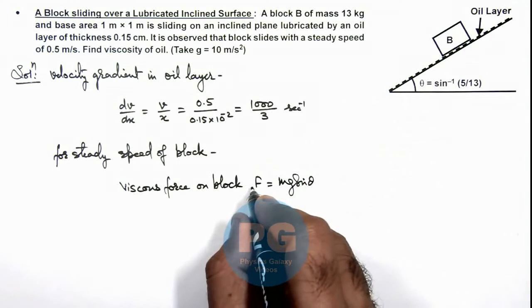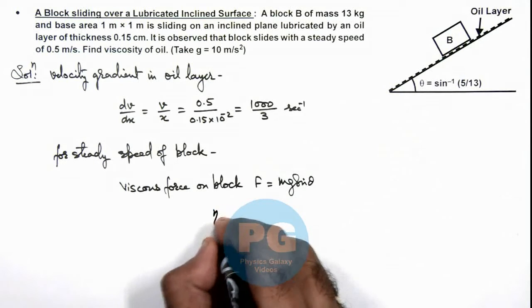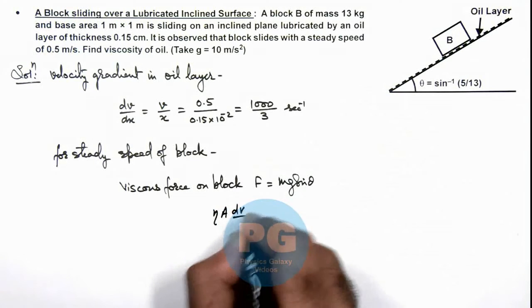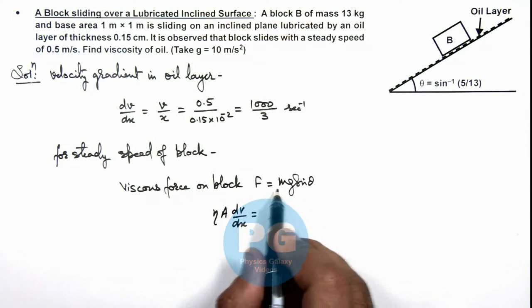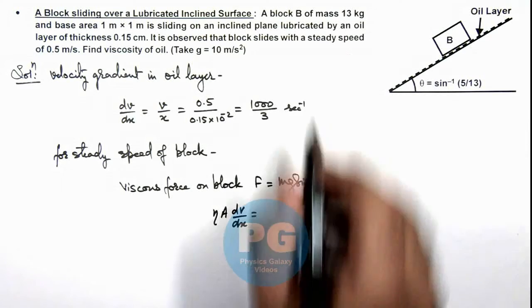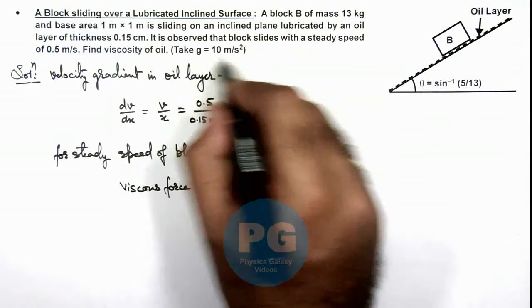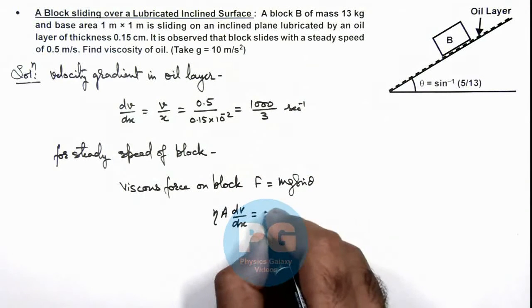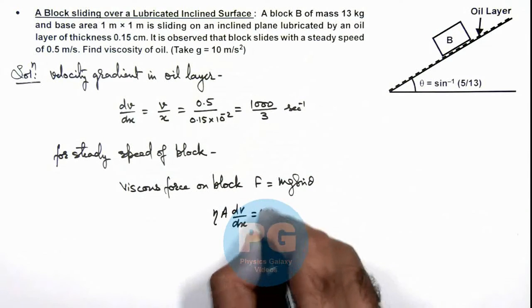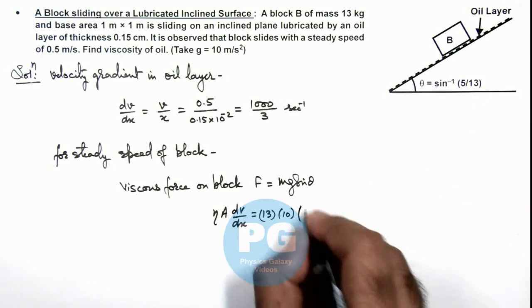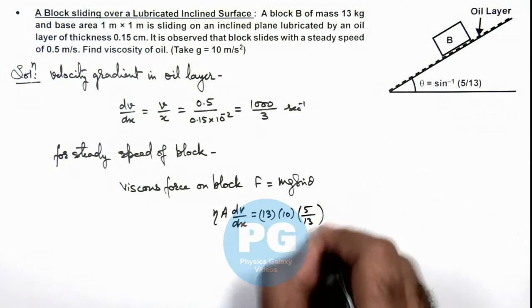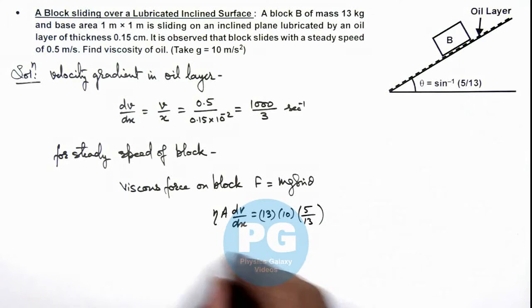Here the viscous force we can write as η A dv/dx must equal mg sin θ. Here the mass of block B is 13 kg and g is to be taken as 10. So this will be 13 × 10 × the value of sin θ, which we are given as 5/13. So when we solve this relation, we get the value of η, which is given as this is 50.